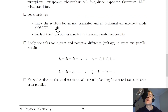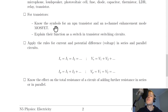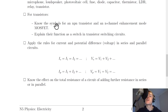For transistors, you need to know the symbols for an NPN transistor and an N-channel enhancement mode MOSFET, and explain their function as a switch in transistor switching circuits. You should know the circuit symbols for both, and that transistors are quite simply electronic switches.